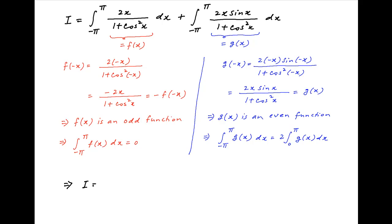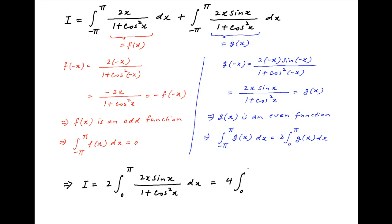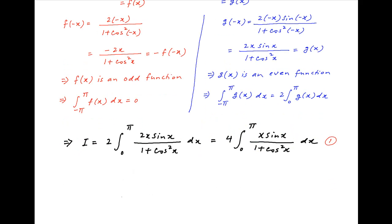Therefore the given integral I is equal to 2 times the integral from 0 to pi of 2x sin x dx upon 1 plus cos squared x. Let's call this result 1. Recall a property of definite integrals that the integral from 0 to a of h(x) dx is equal to the integral from 0 to a of h(a minus x) dx.